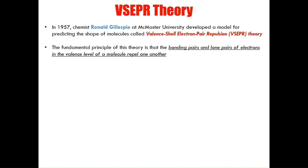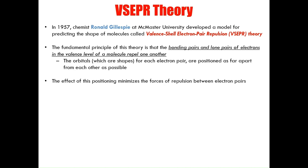The fundamental principle of this theory is that the bonding pairs and lone pairs of electrons in the valence level of a molecule repel each other. This causes the orbitals in the molecule to position themselves away from one another so as to minimize the forces of repulsion between electron pairs. This decreases the molecule's overall energy and increases its stability.